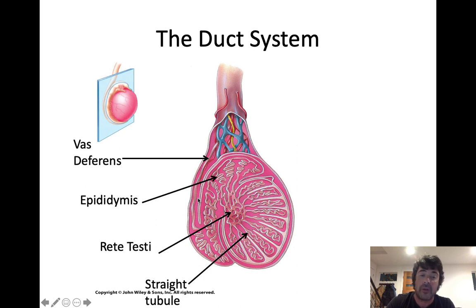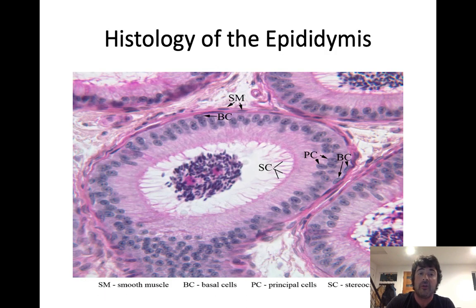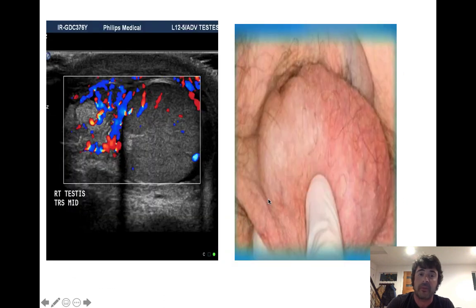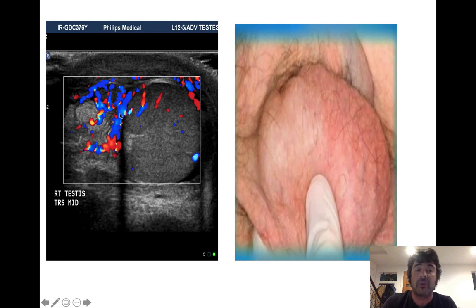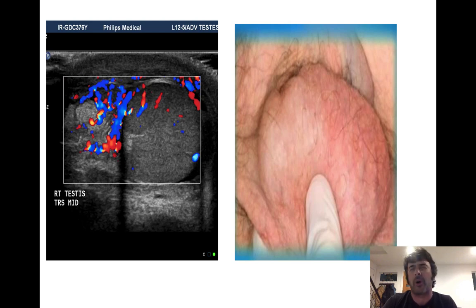Sperm will then move from the epididymis to the vas deferens, which carries sperm from the testes to the ejaculatory duct. Looking at the histology of the epididymis, you can see sperm being stored and maturing. When you get sexually aroused, the smooth muscle lining the epididymis will contract to push those sperm further into the reproductive tract. Because imaging the testes with X-rays or MRI would damage delicate germ cells, a bread-and-butter procedure for many sonographers is testicular imaging using Doppler sonograms to look at blood flow safely.